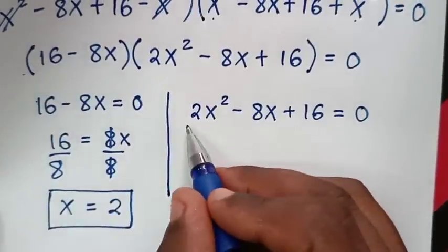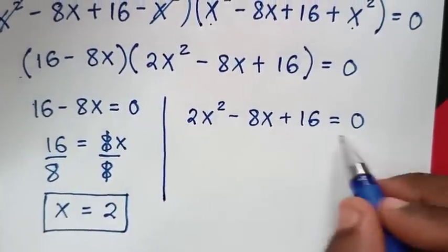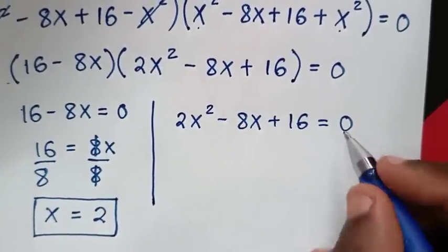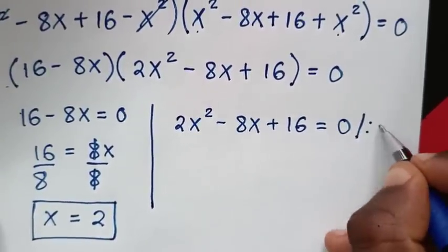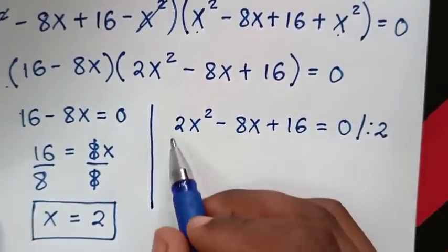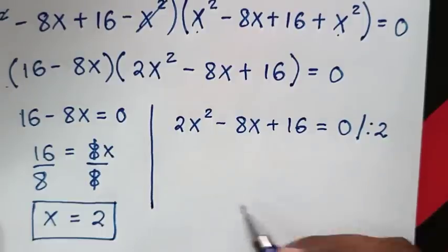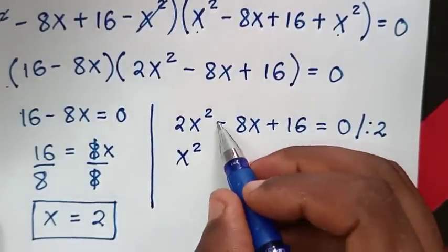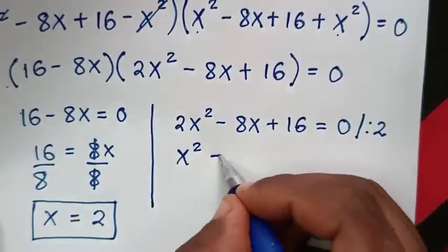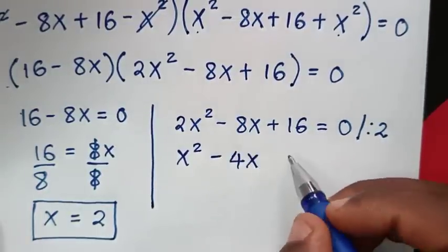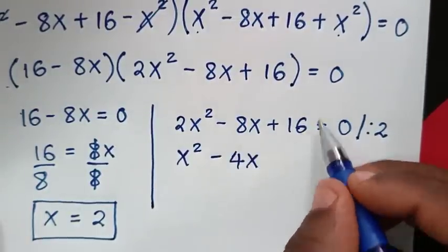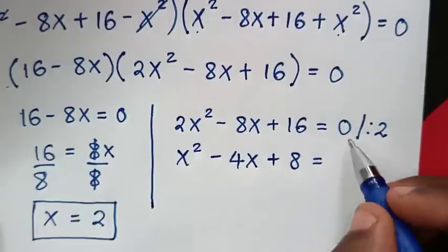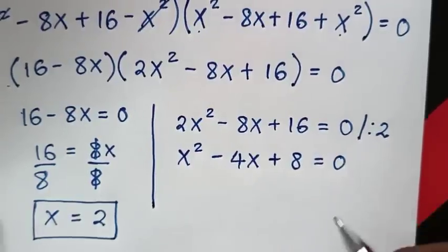Now solving the second equation: 2x² minus 8x plus 16 equals 0. This equation is divisible by 2 on both sides. Dividing through by 2 gives x² minus 4x plus 8 equals 0.